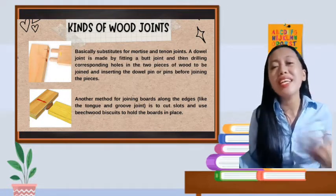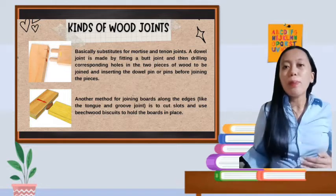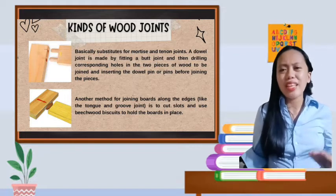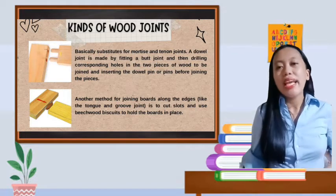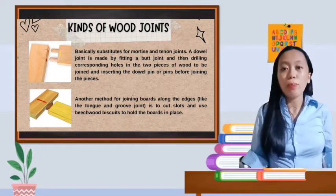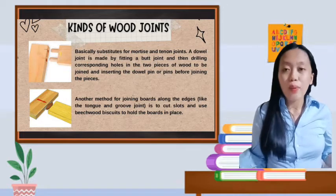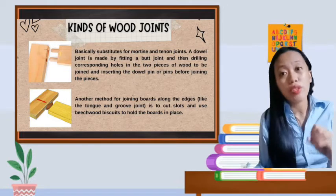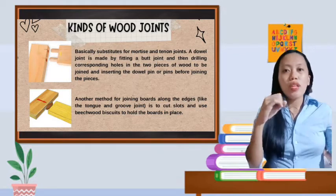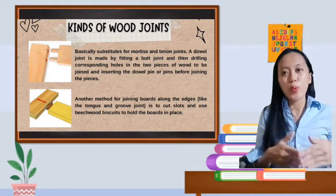Dowel joints basically substitute for mortise and tenon joints. A dowel joint is made by fitting a butt joint and then drilling corresponding holes in the two pieces of wood to be joined and inserting the dowel pins or pins before joining the pieces. If you notice in the picture, there are dowels. From the word dowel, they are connected by dowels to make it stronger and reconnect the two woods.